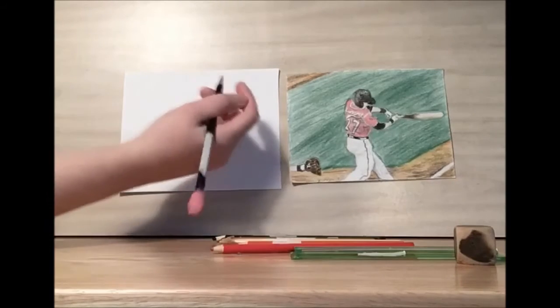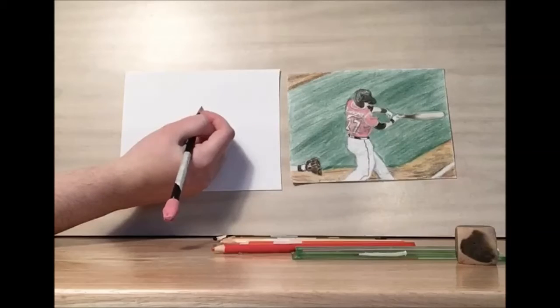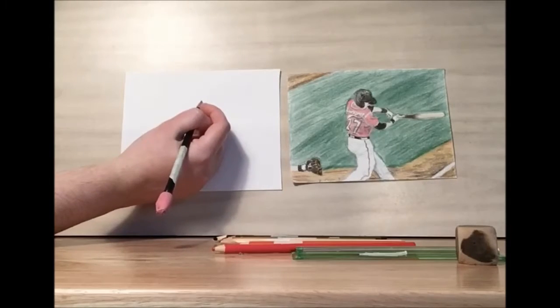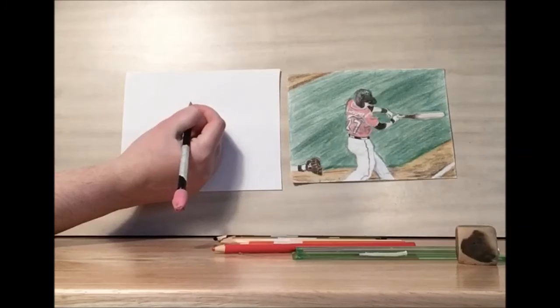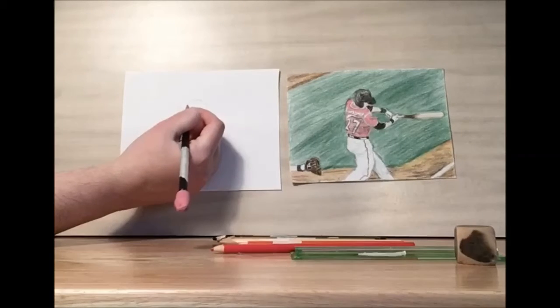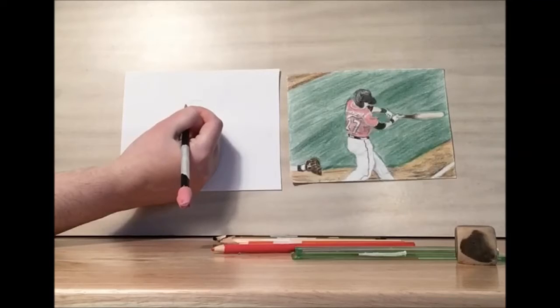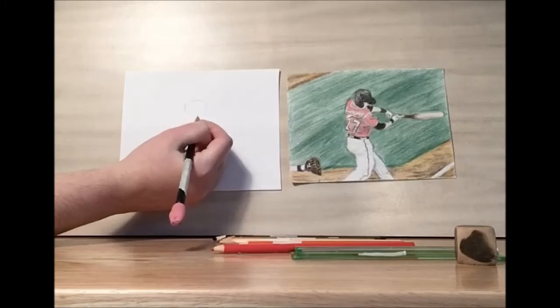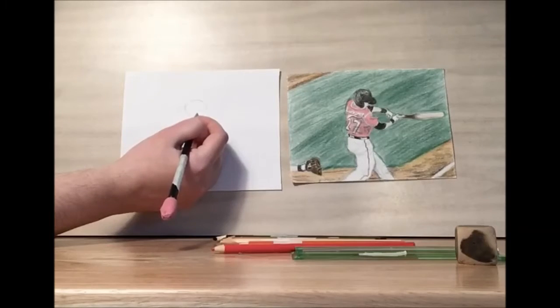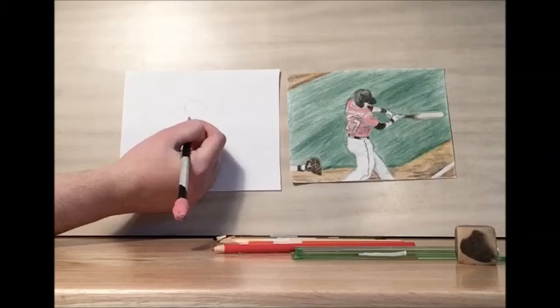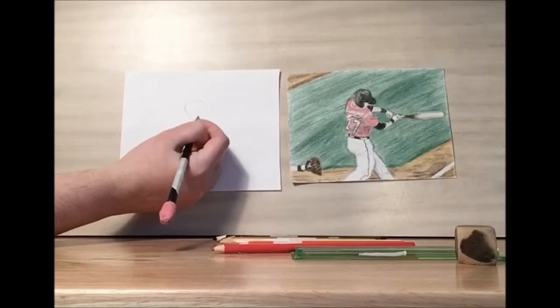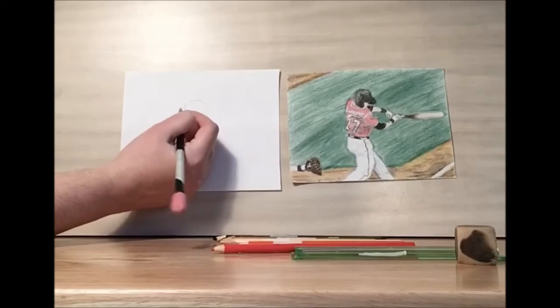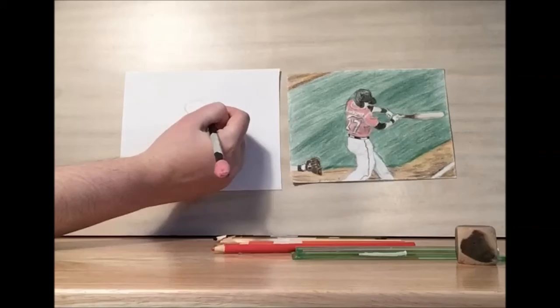To get started we're going to work on the helmet first. I'm taking my number two pencil and we'll draw a half circle that comes all the way around, almost like we're making a giant C. Then I'm going to do another half circle that connects to it.